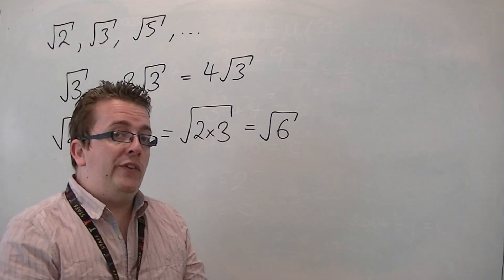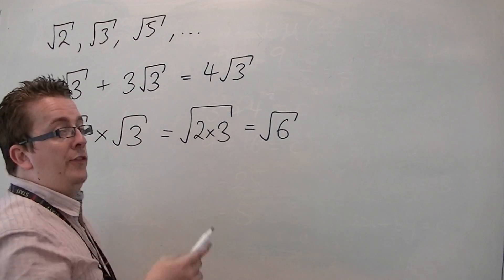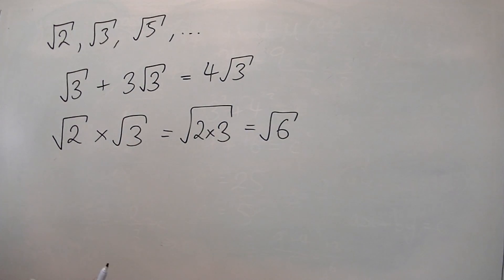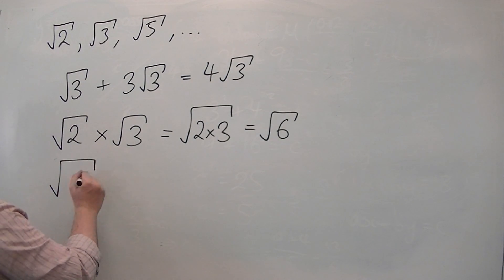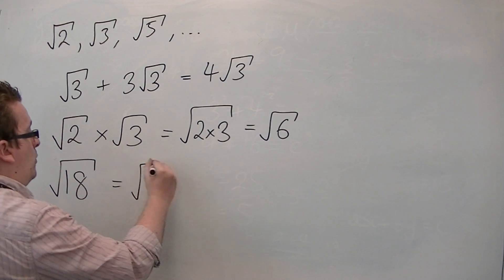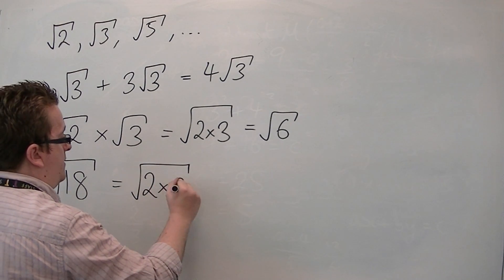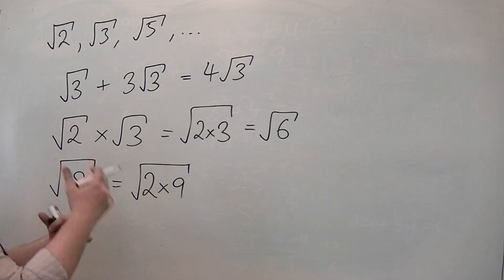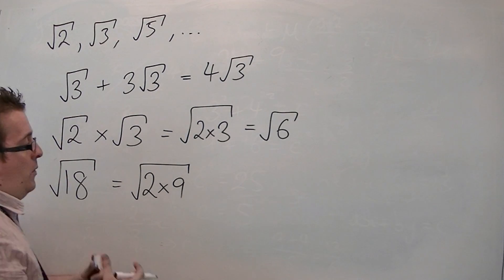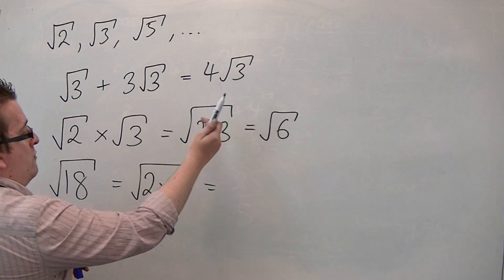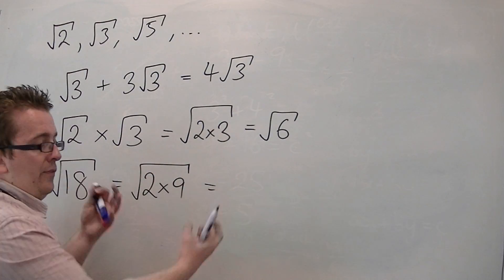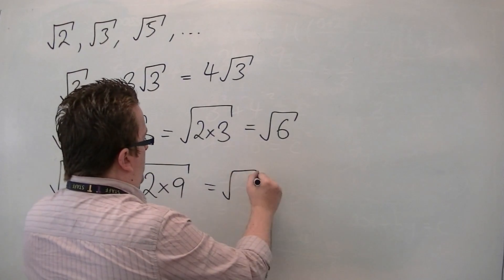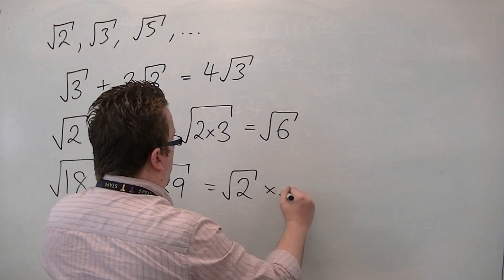Now, what this allows you to do, if you reverse the process, is if you have something like the square root of 18, then you can write 18 as the square root of 2 times 9, for example. And then you can say to yourself, well, if we can go from left to right here, we can also go from right to left, and we can split the square root into root 2 times root 9.